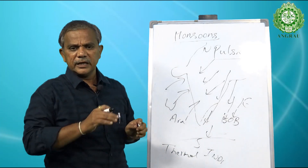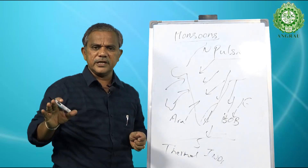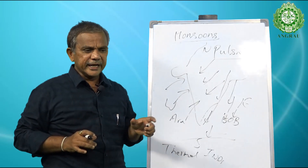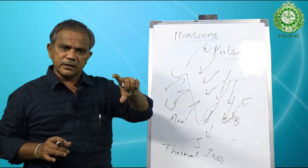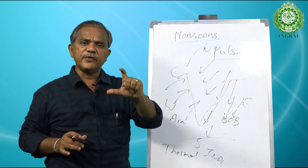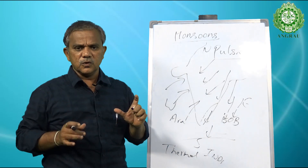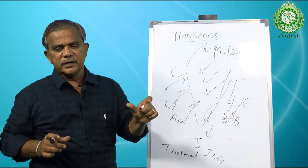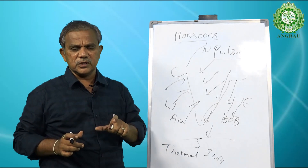The rainy days are not continuous; there are also dry spells. Technically, a dry spell is defined as a period of no rainfall for 15 days. This is one factor that determines the quality of the monsoons.